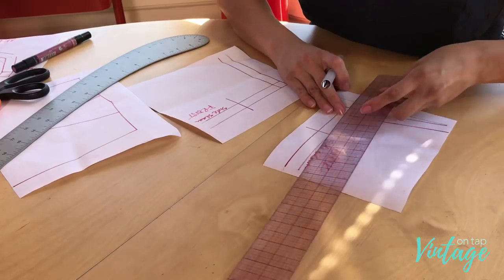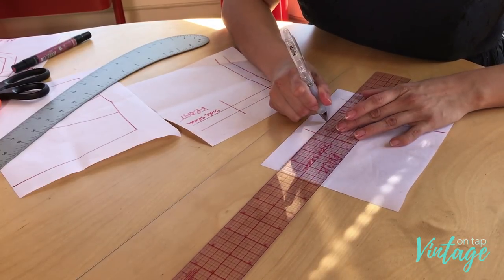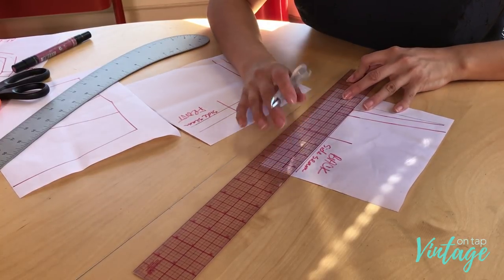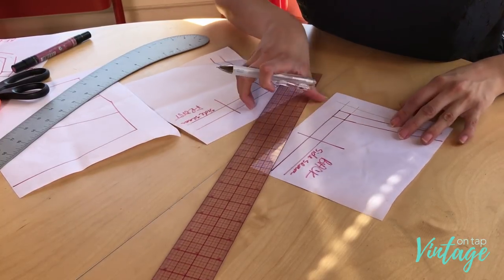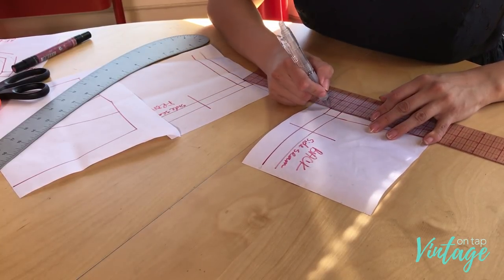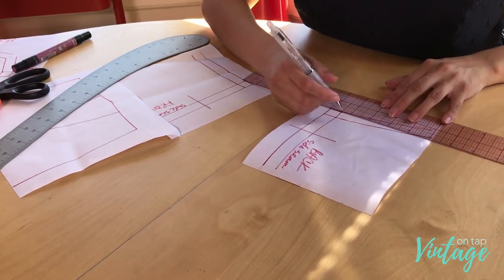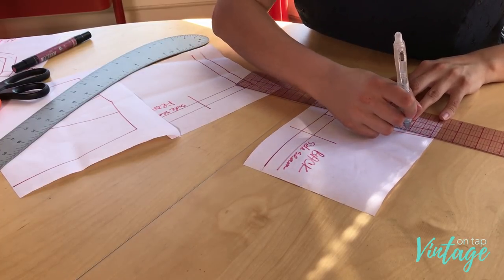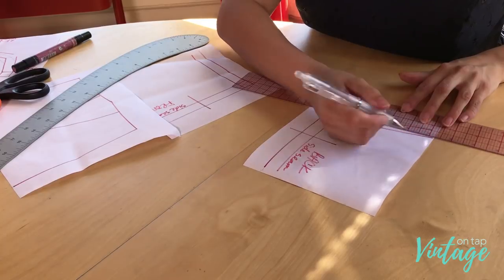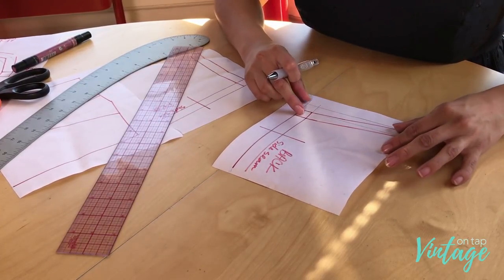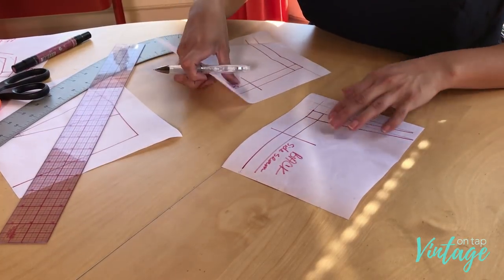At that point, I can take my ruler and extend my seam allowances out. I also know that my seam allowance is going to go up here. If I'm drawing out that seam allowance all the way out to where it goes, you can see that I've moved down that seam allowance and added that space.